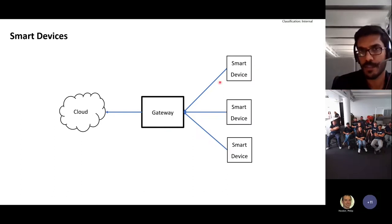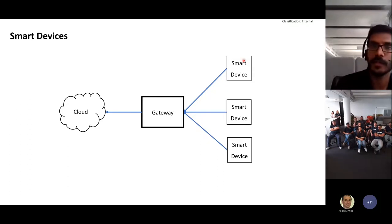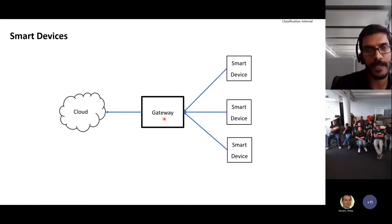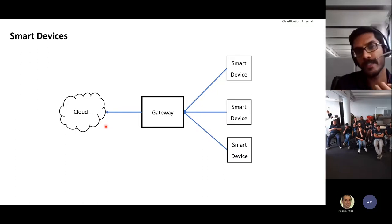The other use case is that smart devices wouldn't want to send all the data they generate to the cloud. They want to reduce the volume of data pushed to the cloud by pushing data to the gateway device and doing some filtering, aggregation, or additional data processing at the gateway — then only sending that filtered or processed data to the cloud, so only the relevant data gets pushed.